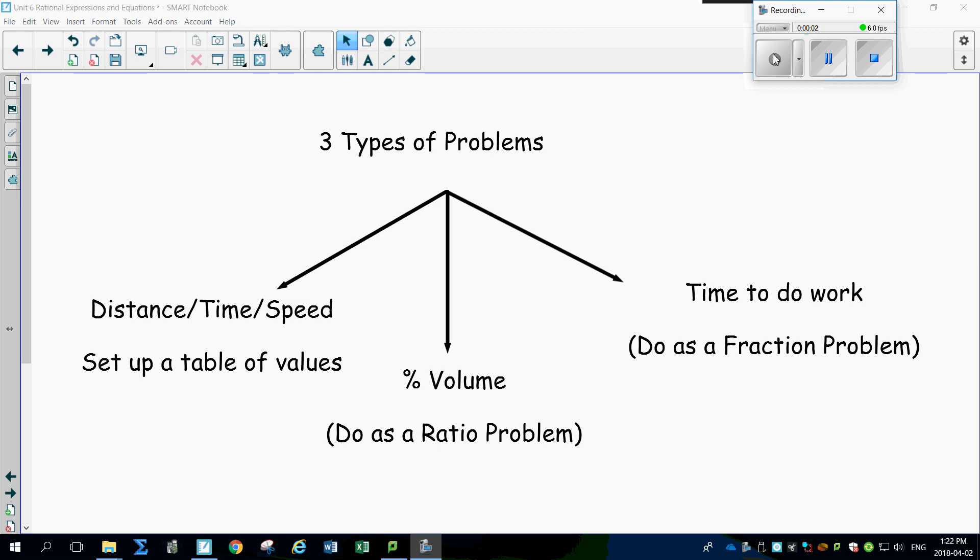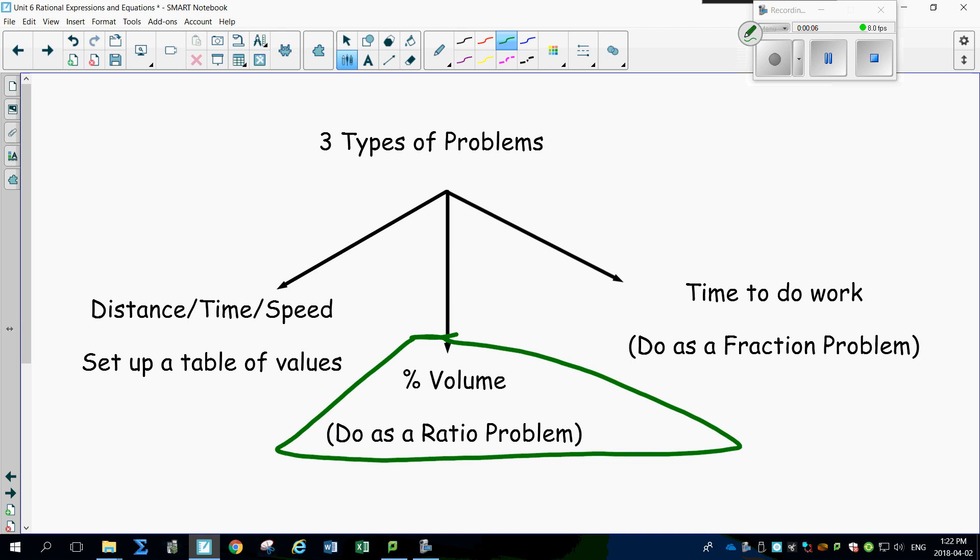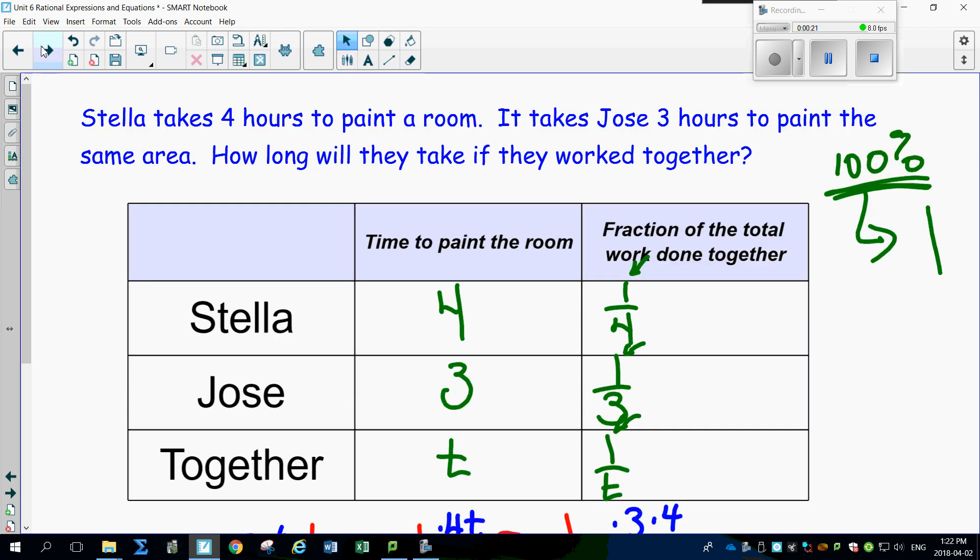The last question we need to do is these percent volume problems, which I think are probably the easiest out of them all. Percent volume means how much vinegar is found in salad dressing, for example. So skip all the questions we just did and we're going to go right to this bleach question.